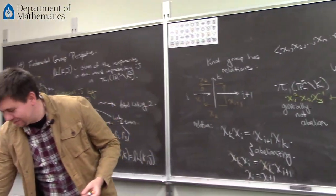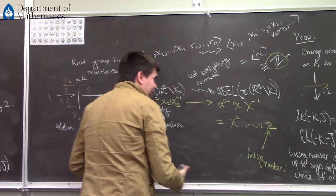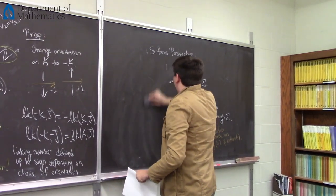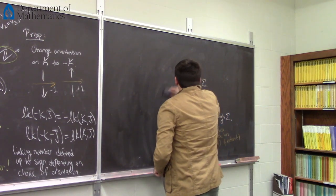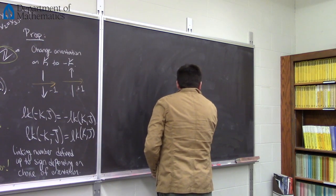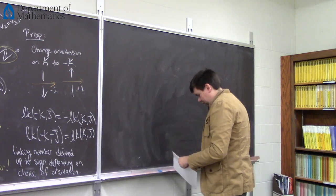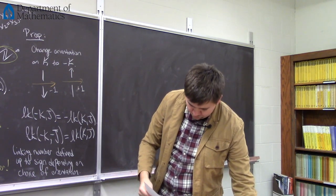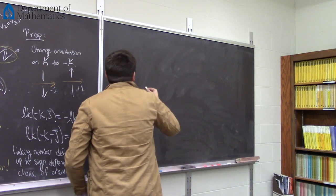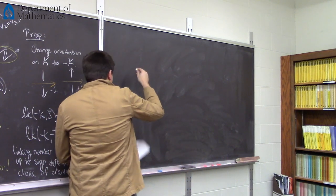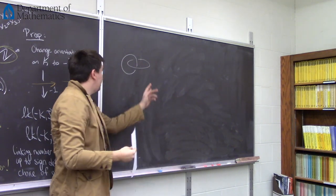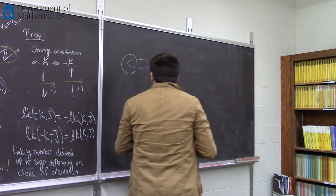Gauss, back in the 1800s, had already been thinking about this question — before fundamental groups, before algebraic topology took off. Gauss thought about using the language of calculus. He said: instead of thinking about these as components of a link, think about them as simple closed curves. Those curves have some parameterization. Call this K being some function of S — a parametrized curve — so K(S) = (X(S), Y(S), Z(S)), where S runs between some initial value and some final value.